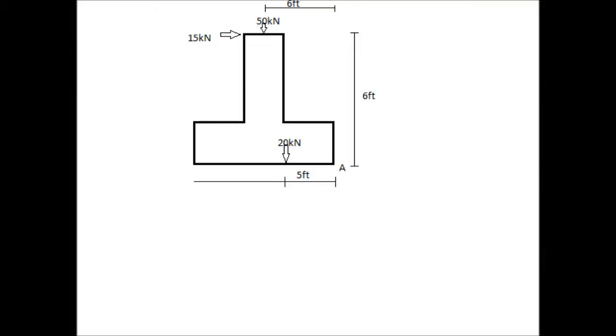What we have here is a retaining wall that is 6 feet tall and has a 12 foot wide footing. There are three forces acting on this retaining wall. First is a horizontal force of 15 kN acting at the top of the wall. The second force is a vertical force of 50 kN acting downward on the top of the wall. The final force is another vertical force of 20 kN acting downward on the retaining wall in the footing.